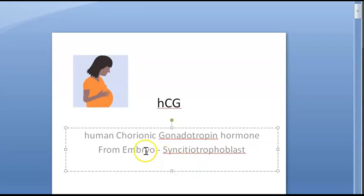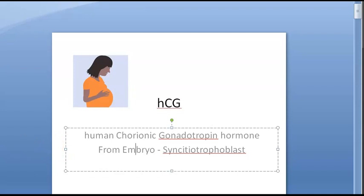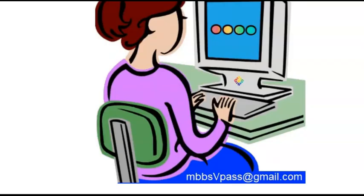HCG is actually made from the placenta — specifically from the syncytiotrophoblast of the embryo. That is why you can find it especially in pregnant females, and this is the hormone used for detecting pregnancy.